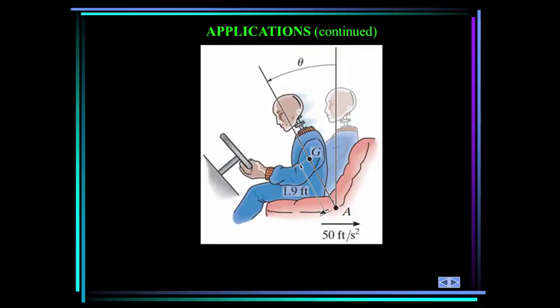During impact, the center of gravity of this crash test dummy will decelerate with the vehicle, but also experience another acceleration due to its rotation about point A. How can we use this information to determine the forces exerted by the seat belt on a passenger during a crash? All these problems can be solved using the equations of motion for general planar motion.